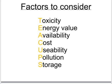GCSE questions tend to ask you about factors you might need to consider when choosing a fuel for a particular scenario. One thing you might consider is whether the fuel is toxic or poisonous. Secondly, what's the energy value — in other words, how many joules are produced by burning, say, one kilogram of that fuel?